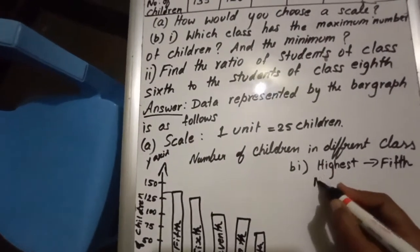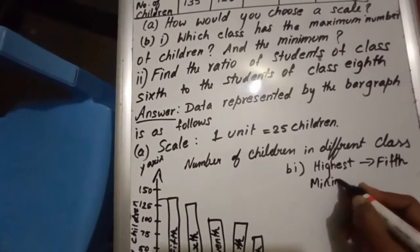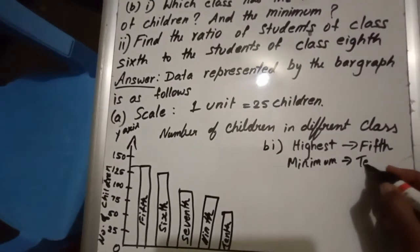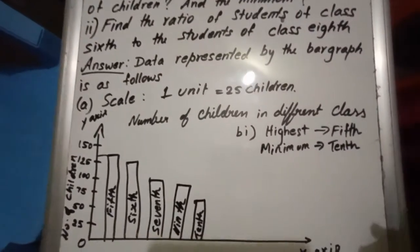Next, minimum. Minimum means lowest one. That is which class? 80. That class is 10th. Hope you understood.